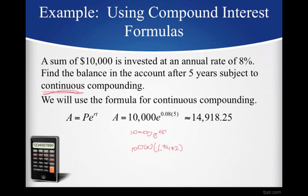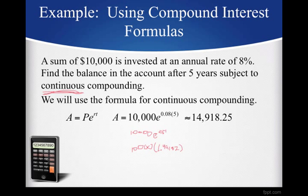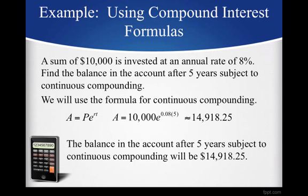Notice, we're making a little bit more money the more frequently we compound. So, after five years with continuous compounding, we get $14,918.25. Recall, with quarterly, it was $14,859. So, it's certainly a better deal for us when it's our money that's growing, we want more frequent compounding. If we owe money, if we borrowed money, then we don't want to ever compound it.